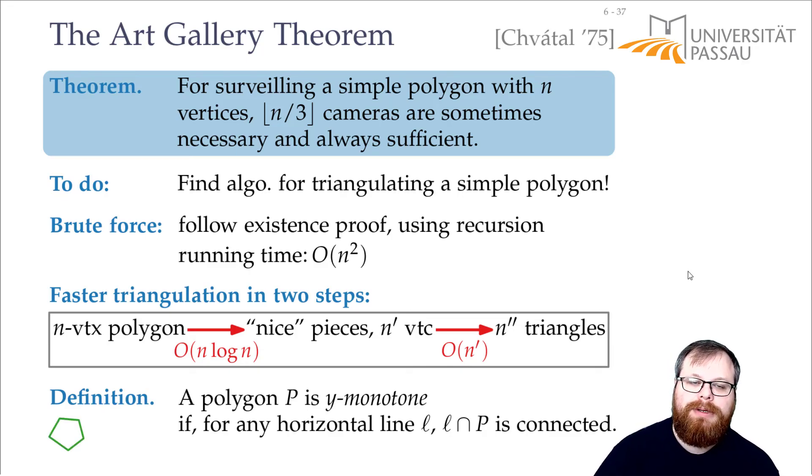So for example, a convex polygon, of course, is y-monotone. But this polygon here is not convex, but it's still y-monotone. Because whatever line we lay through it, we can only get one piece of the polygon. On the other hand, this is not y-monotone. This is x-monotone. But if I lay one vertical line through it, like this, then the intersection is not connected. Because we get this part and this part. So this is not a y-monotone polygon.